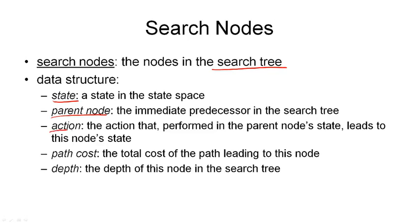Then we have to store an action in a search node — that is the action that gets us from the parent node to this node, or more precisely, from the parent node's state to this state. We also want to store the path cost, which is the total cost of the path leading to this node in the tree. Finally, we can store the depth in the tree, which allows us to do, for example, a simple cutoff if we go too deep in the search tree.